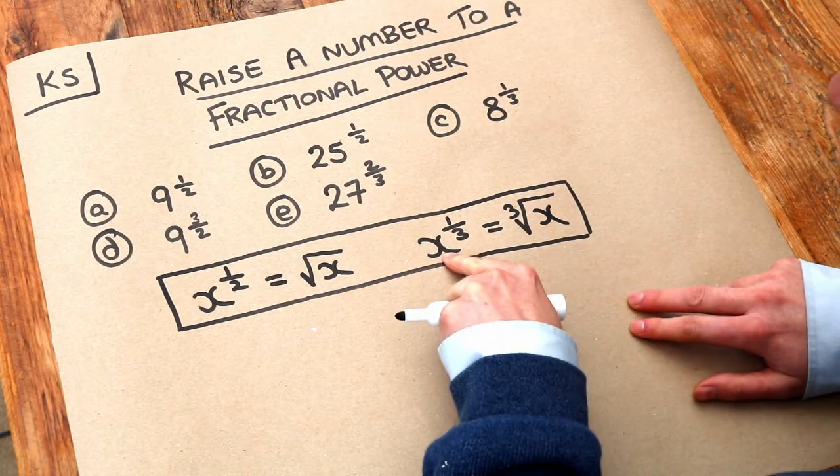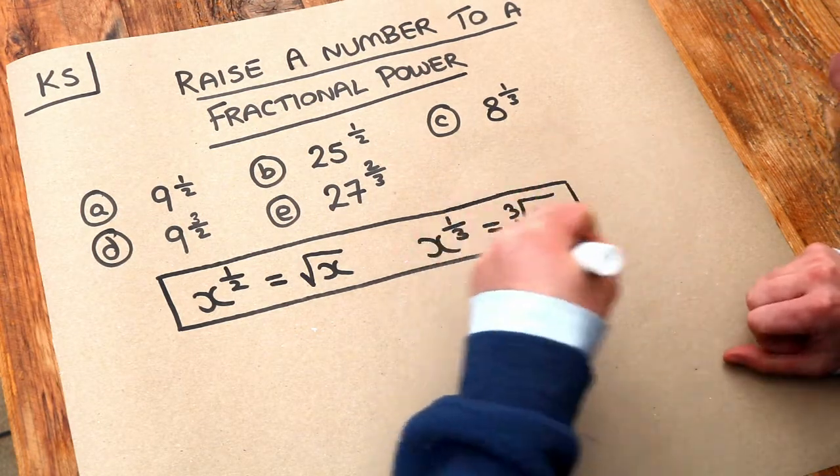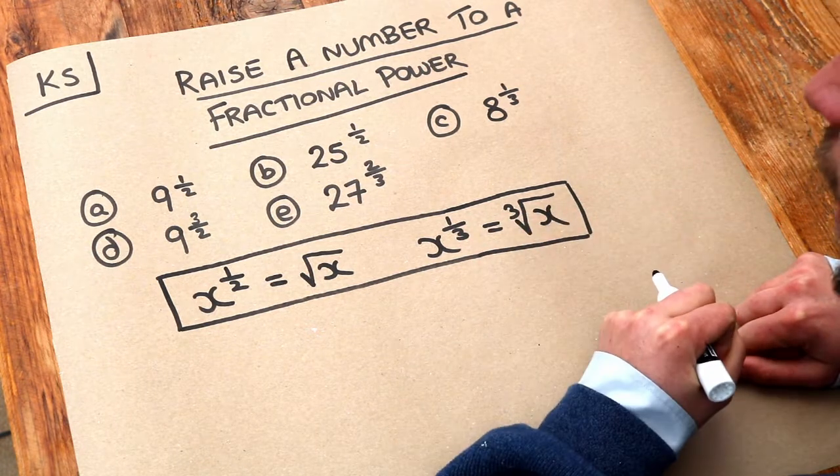And similarly, if we want to do something to the power of a quarter, we'd do the fourth root. If we wanted something to the power of a fifth, we'd do the fifth root, etc.